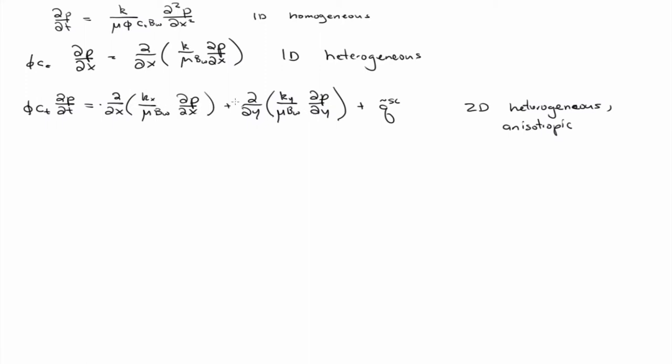Notice there are two different permeabilities. The permeability in the X direction, the permeability in the Y direction. And this includes wells, because I have a flux term over there. There's actually one more, there's one more assumption in this. Can anyone tell me what it is?